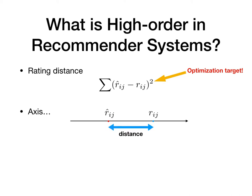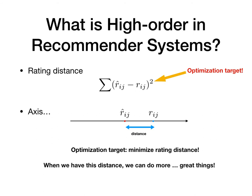We assume that r-hat-ij locates here as a red point and r-ij locates here as a blue point. Obviously, the distance exists on this axis. Then, during the process of optimization, reducing the rating error is equivalent to reducing the rating distance. Since the blue point is fixed on the axis, the red point is going to move to the blue one when the optimization starts. The amazing thing is here.